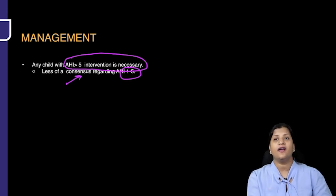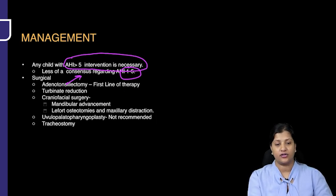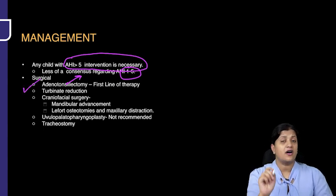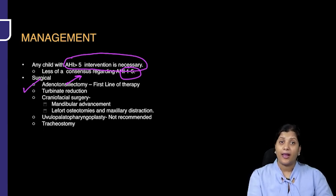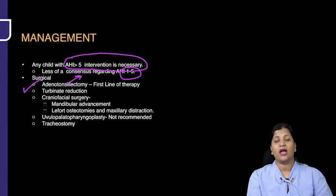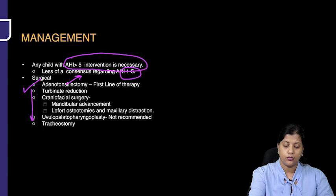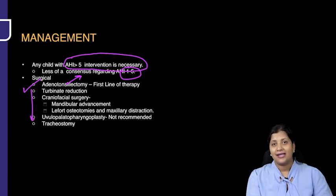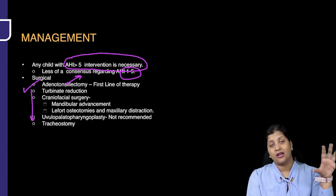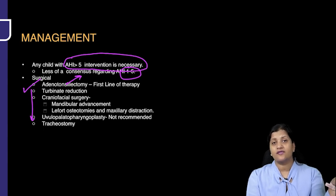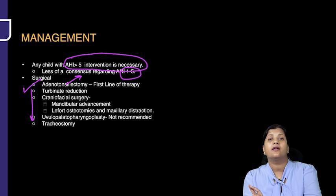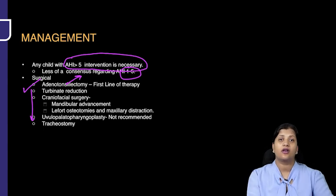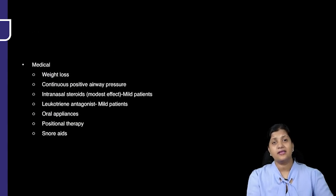Definitely, more than 5 you have to do an intervention. Surgical therapy — adenotonsillectomy — is the first choice of treatment. Turbinate reduction, craniofacial surgery, uvulopalatopharyngoplasty, and tracheostomy are the order of surgeries. We will always try to use less invasive, more conservative surgery in the preliminary part, and more invasive and radical surgery as we progress further in the disease.